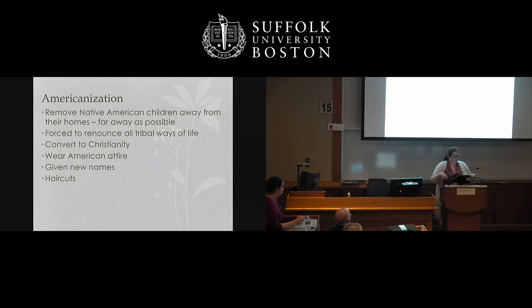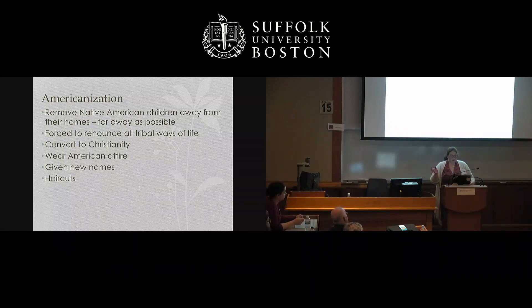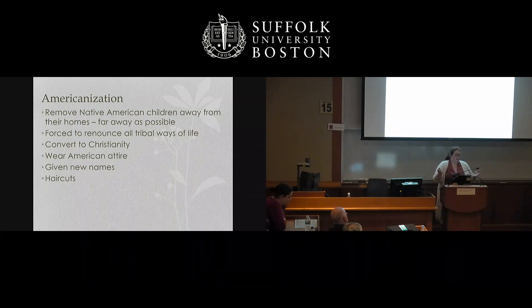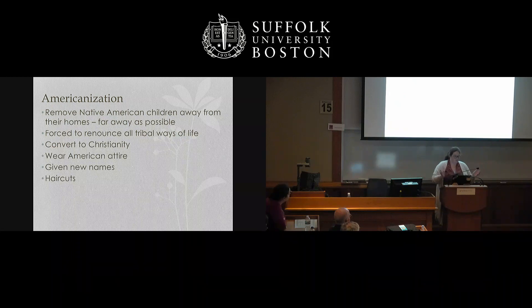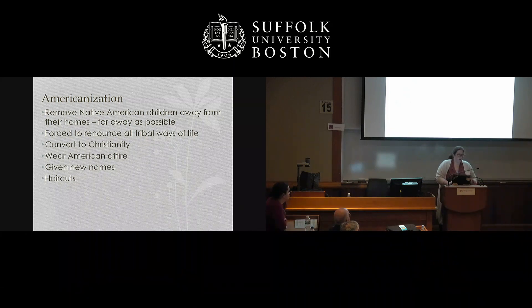Children were forced to wear muslin clothes very different from their traditional clothing. They were given new Christian names and assigned surnames. The idea behind assigning surnames was that the US government hoped that when children left school and started inheriting land from Indian property, they could then take it from them, or that assimilated students would more willingly accept ideas of manifest destiny and westward expansion. They also had their hair cut off — in some cultures, long hair is a sign of strength and warrior identity, closely tied to their very identity.